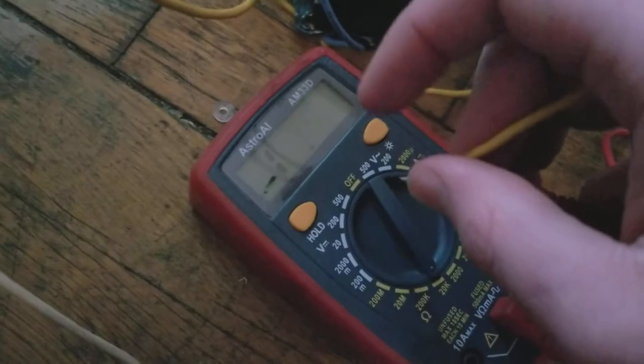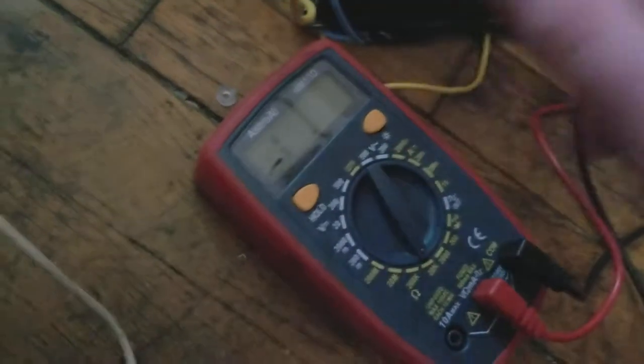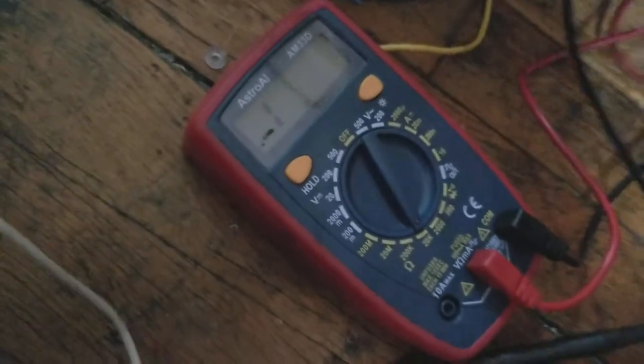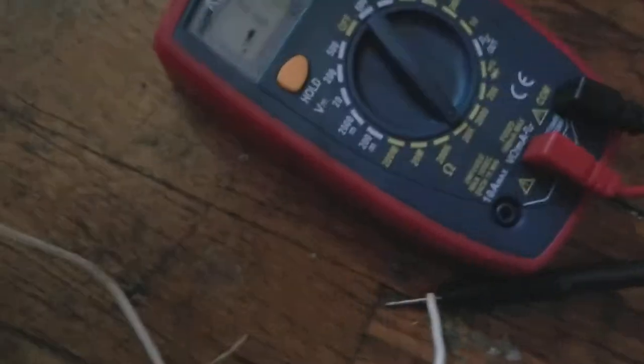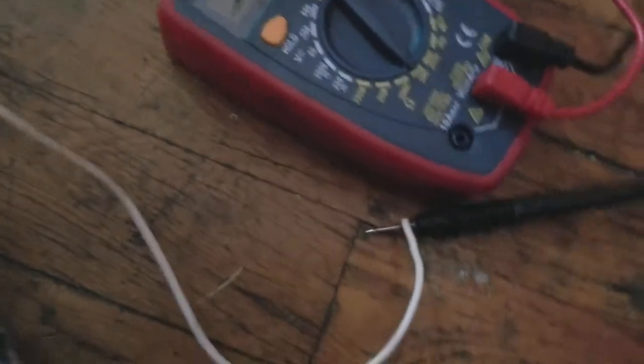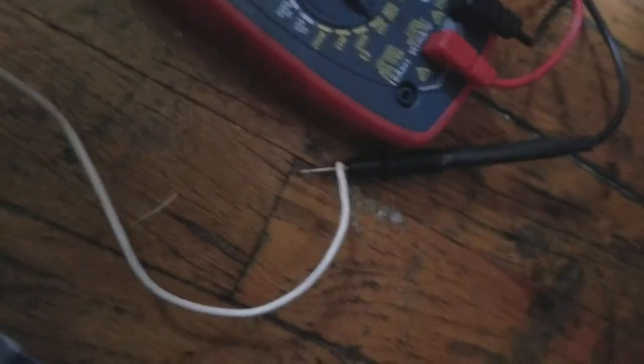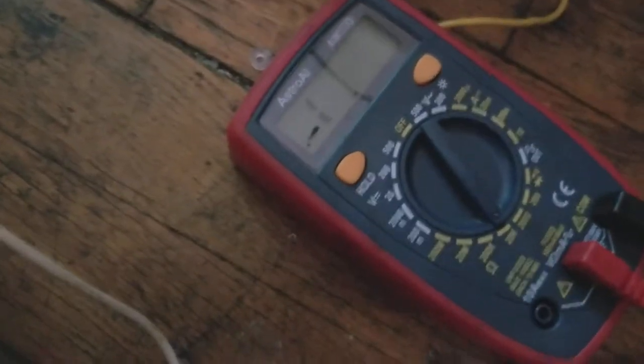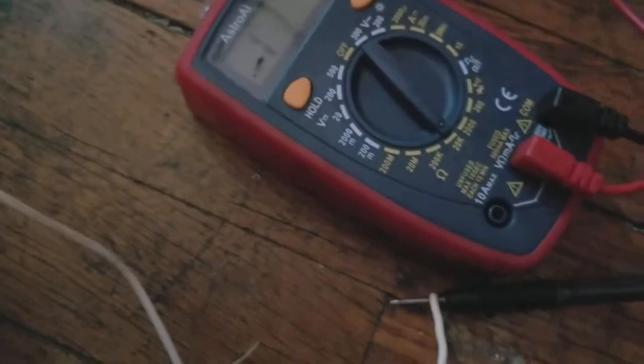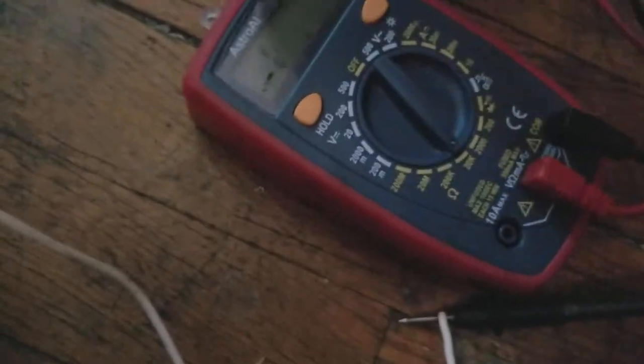Yep, it's still reading one. And the next one, the red one—one. The other red one should also be reading one. Yes, the red one is also reading a one. And let's test out this yellow one. Oh, that yellow one—oh, I mean the blue one.